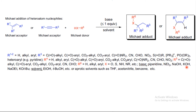The best-suited bases for Michael addition are piperidine, triethylamine, sodium hydroxide, potassium hydroxide, sodium ethoxide, and potassium tert-butoxide. The best-suited solvents are ethanol, tert-butanol, as well as aprotic solvents such as THF, acetonitrile, and benzene.